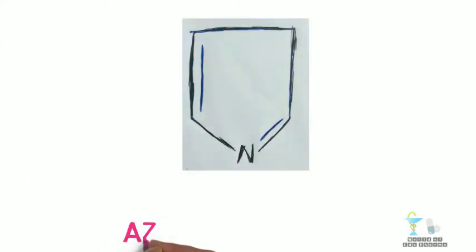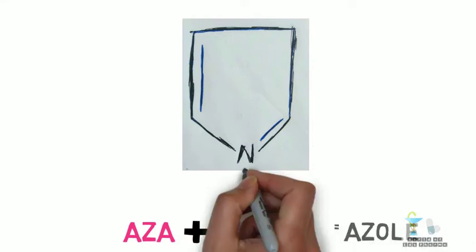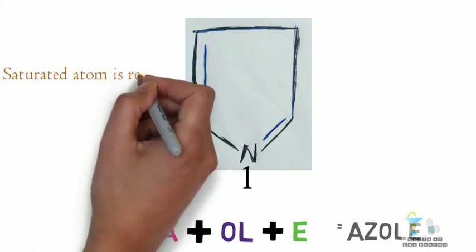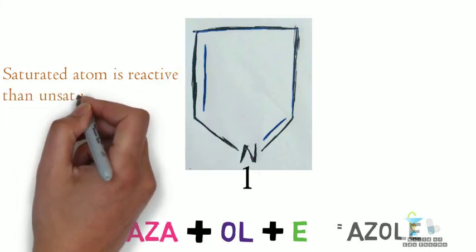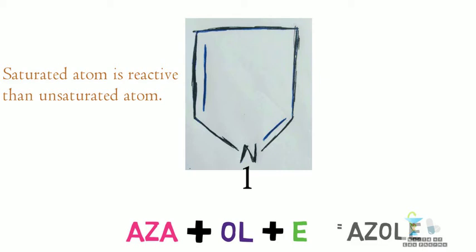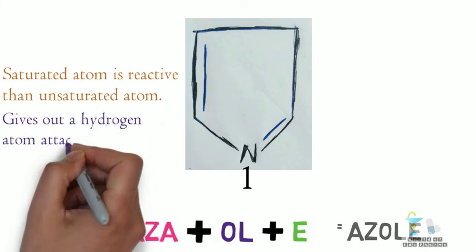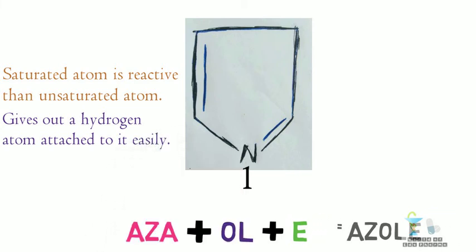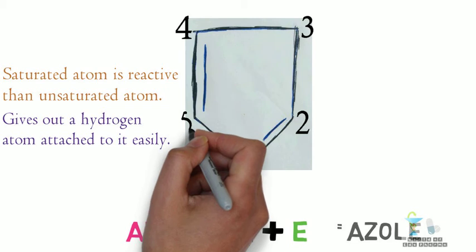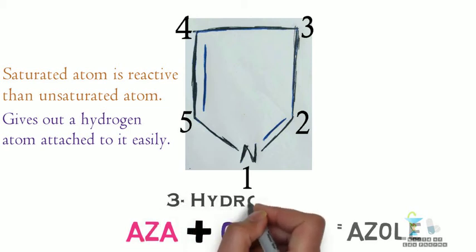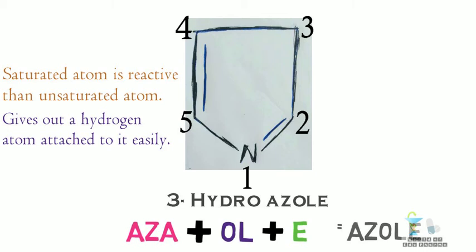AZA for nitrogen, OL for five-membered ring, E for unsaturation. Numbering it, first position for nitrogen. In this molecule it will be little confusing to give number. In this case, the saturated atom is very reactive than unsaturated atom. So the saturated atom must be given high priority during numbering, as saturated atom gives out a hydrogen atom attached to it easily. So number two, three, four, and finally five. In the third position there is hydrogen atom, so it can be called as 3-hydroazole.